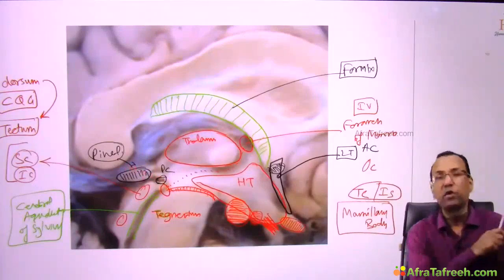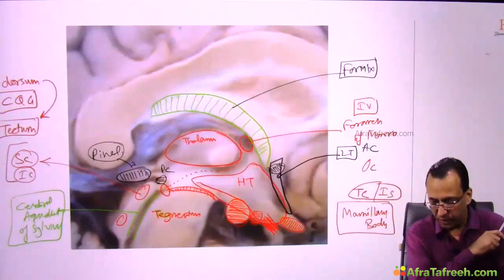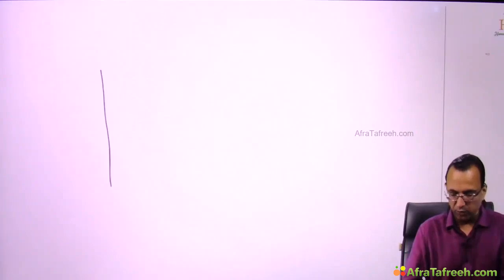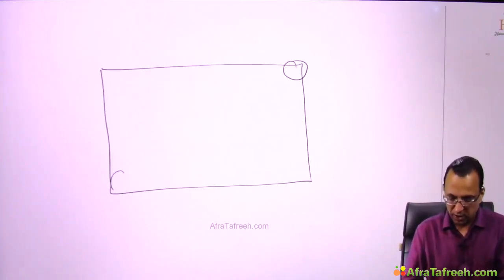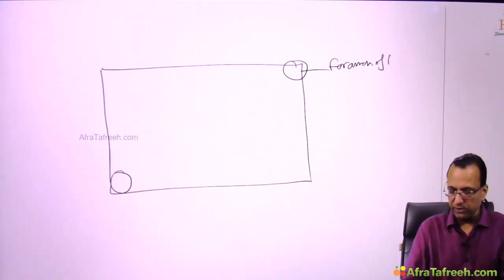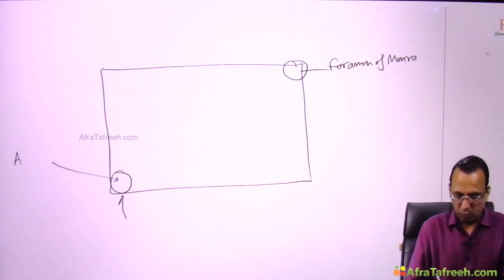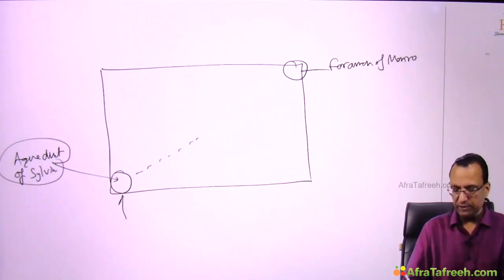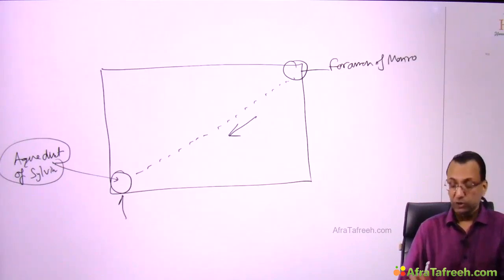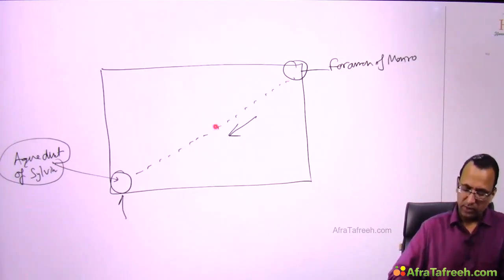We will make a schematic diagram of the boundaries of the third ventricle. Starting from the foramen of Monroe — where does it end? At the beginning of the aqueduct of Silvius. That is the extent of the third ventricle — that is where the CSF is running, flowing downward.